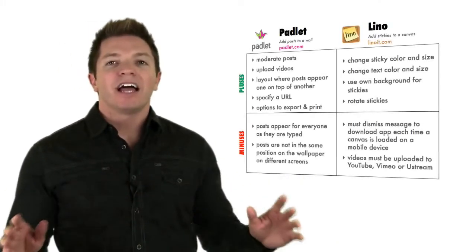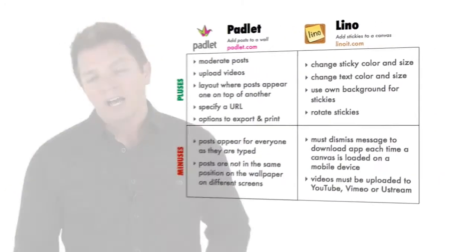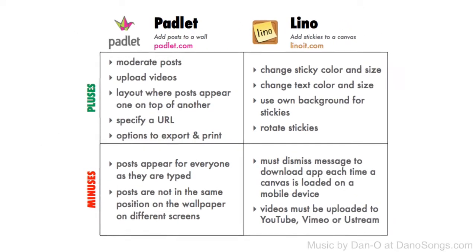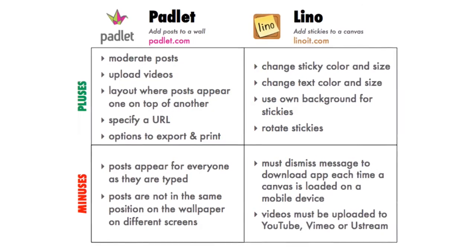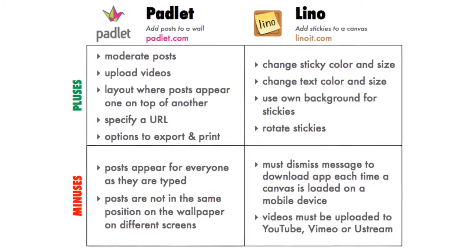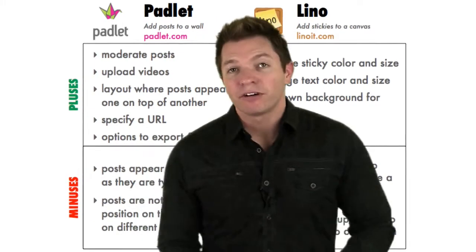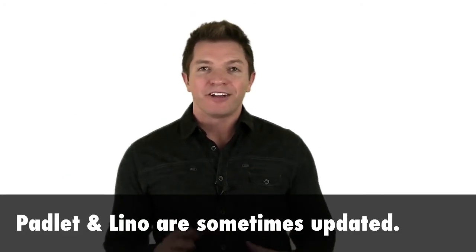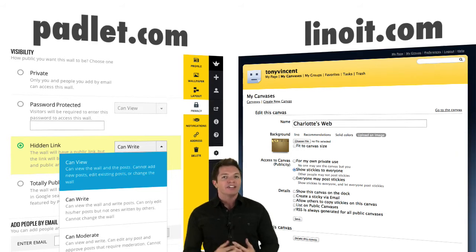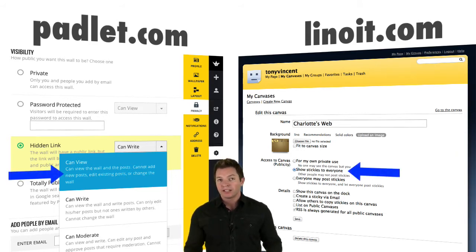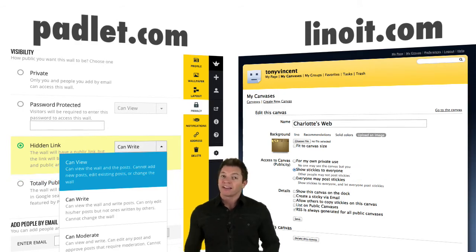Here's a chart comparing Padlet and Lino. You can view this chart at learninginhand.com. You can find lots more features in Padlet and Lino, like embedding and emailing. These online tools are sometimes updated, so you can be sure there will be future changes, hopefully for the better. Whether you're using Padlet or Lino, I suggest that if it's a wall you plan to keep, change the privacy of the wall so that no one else can add to it after all of the student contributions have been posted — this way it's not open for possible vandalization in the future.